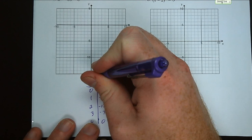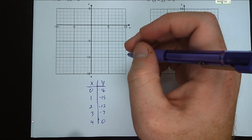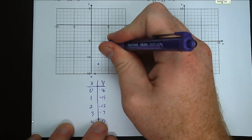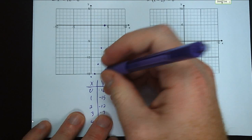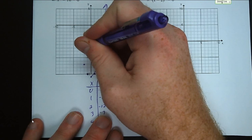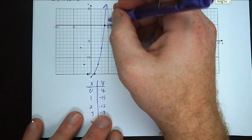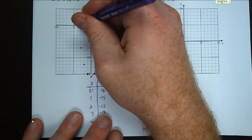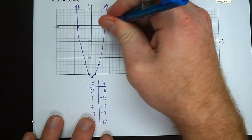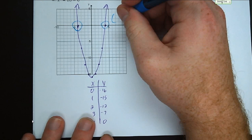We plot those points: zero negative 16, one negative 15, two negative 12, three negative seven, four zero. Then we mirror it to the other side of the axis of symmetry. My roots are my x-intercepts. I cross the x-axis right there and right there, so my roots for this function are four zero and negative four zero.